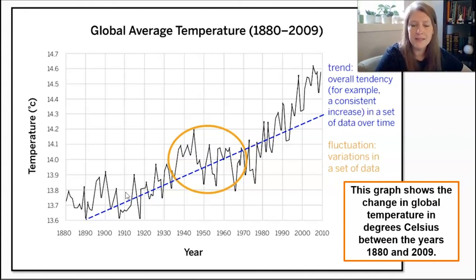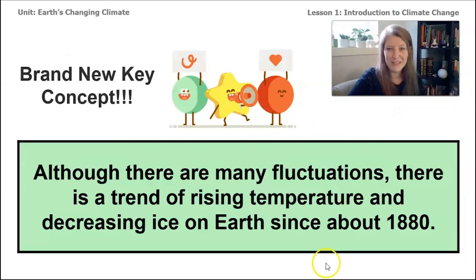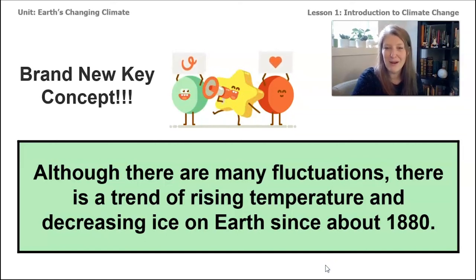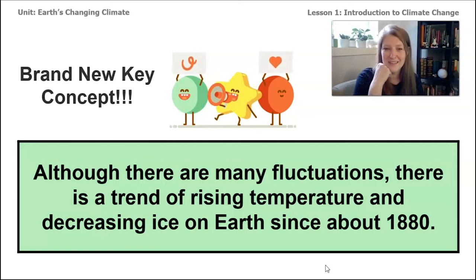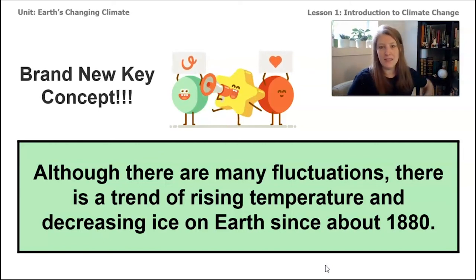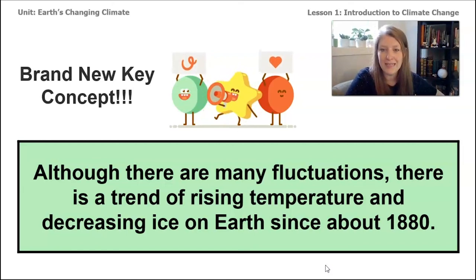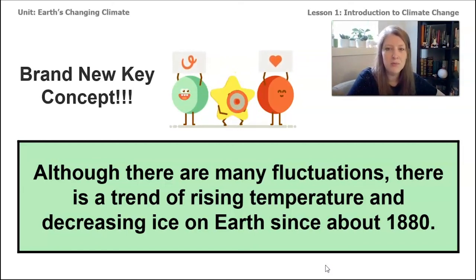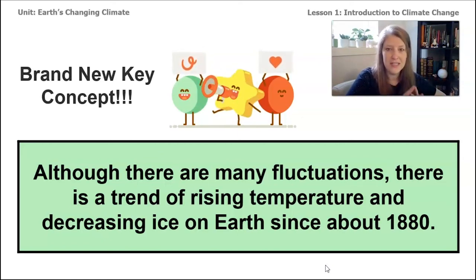Looking at this data that scientists actually analyzed, we can see there is definitely evidence that supports the idea that the ice on our planet is melting, and there seems to be a connection to the amount of temperature on the planet during a certain year and the amount of ice. Our key concept for lesson one is: although there are many fluctuations, there is a trend of rising temperature and decreasing ice on Earth since about 1880. In our next lesson, we're going to investigate why that might be happening.